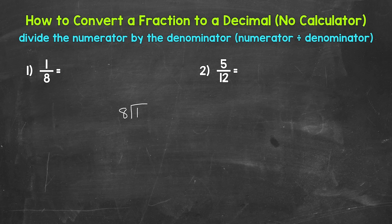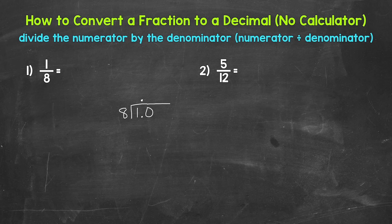As far as one divided by eight — how many whole groups of eight in one? We can't do that. So we need to use a decimal and then a zero in order to work through the division. Zeros to the right of a decimal do not change the value of the number. Once we have that decimal and the zero, we bring the decimal straight up into the quotient. Now we can think of this as ten divided by eight — that's one. We put the one above the zero, not the one, since we used that zero in the tenths place.